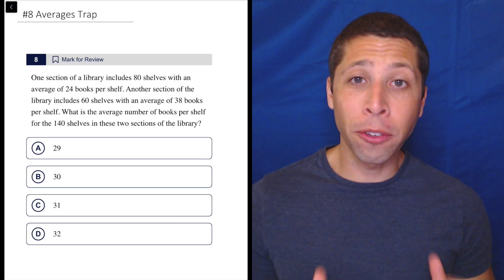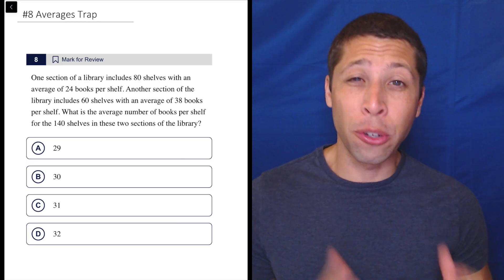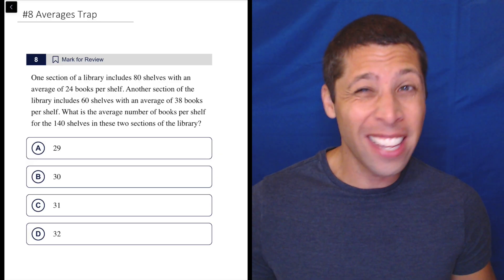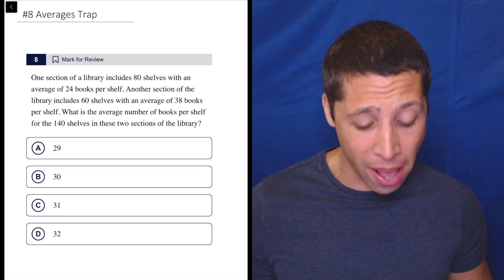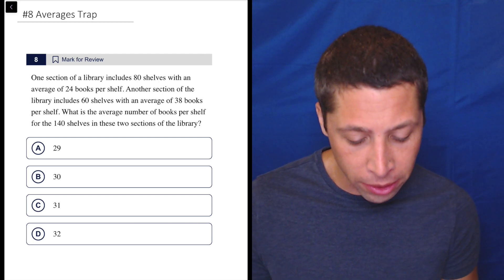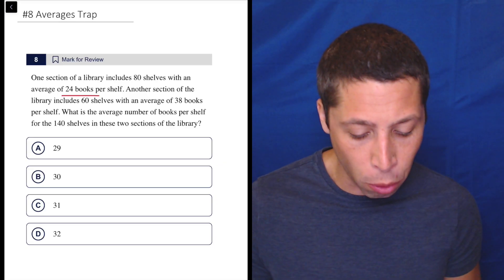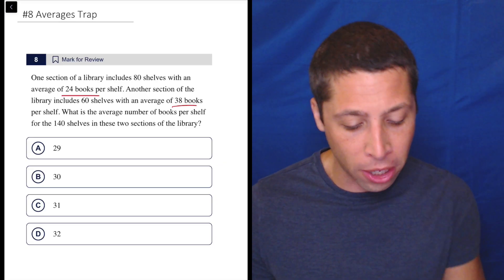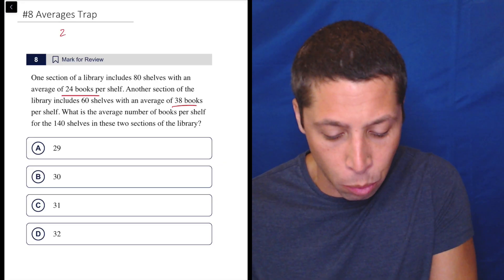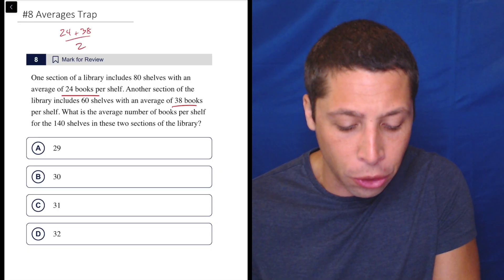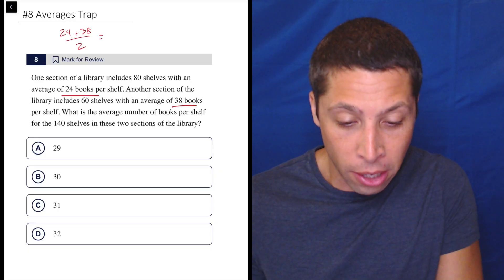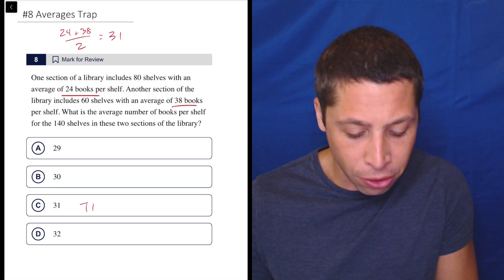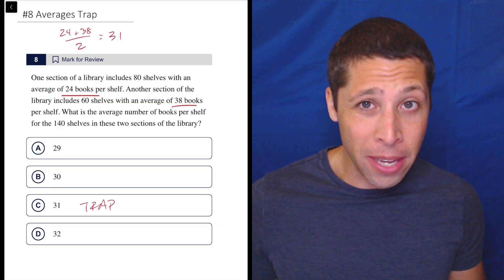This is a more rare kind of trap. It's a good reminder that if you answer a question without using all the information on the SAT, that's not really a good sign, especially in the math section. So what some people do here is they read this question, they recognize that there's 24 books per shelf and 38 books per shelf. So they just add those up. That's going to be 24 plus 38 over 2. They're doing a simple average of just those two numbers. So they get 31. So that is our trap answer.